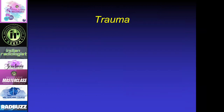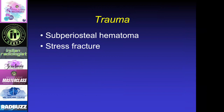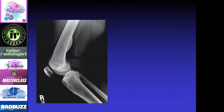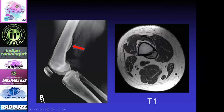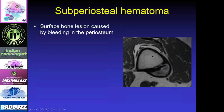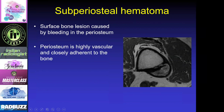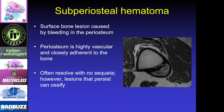Traumatic disorders can mimic certain tumors, including the subperiosteal hematoma or a stress fracture. Here's a lesion on the back part of the femur — on the MRI T1-weighted sequence we can see there's actually a fatty bone marrow type process within this. A subperiosteal hematoma is a surface lesion caused by bleeding or lifting up of the periosteum, and this area will actually ossify and form a mass. The periosteum is highly vascular and closely adherent to bone, so when there's trauma and it lifts off, it can cause a collection of blood that eventually can lead to ossification.